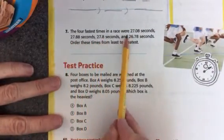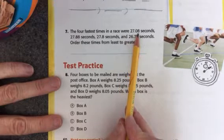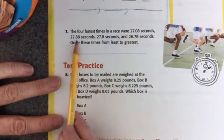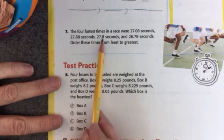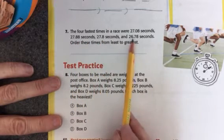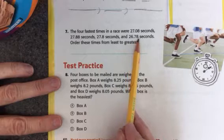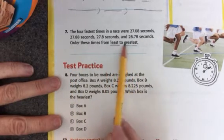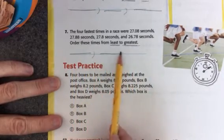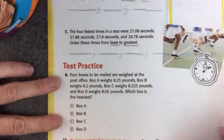Number 7. The four fastest times in a race were 27 and 8 hundredths of a second, 27 and 88 hundredths seconds, 27 and 8 tenths seconds, and 26 and 78 hundredths seconds. Order these times from least to greatest. Find the smallest one and write it first and then the next one and so on.